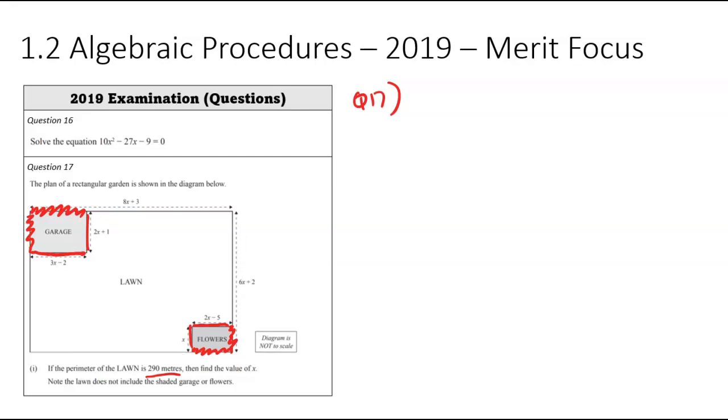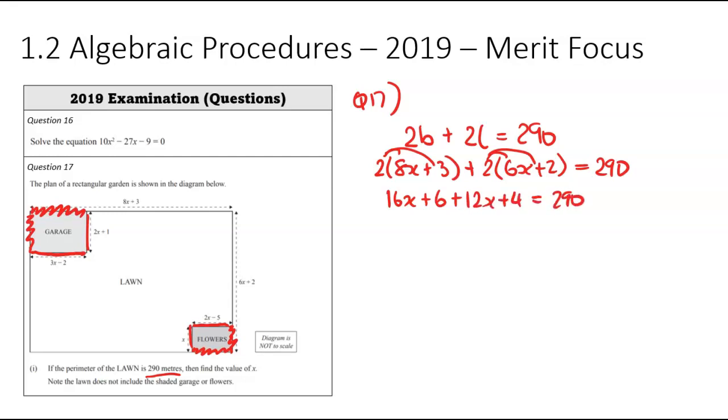So when I set up my equation, it's going to be 2 lots of the base plus 2 lots of the length. That should equal to 290 meters. The base would be x plus 3 up here. So that would be 2 times 8x plus 3. And we're going to then add 2 times the length. That's going to be 6x plus 2. And they combine to get 290. I'm now going to expand. I'll use my rainbow method to expand all of these. So I've got 16x plus 6 plus 12x plus 4 equals 290.